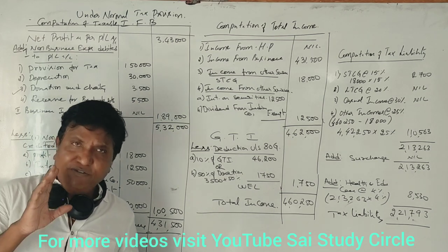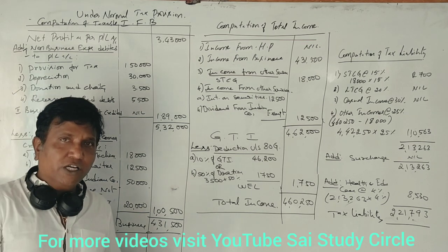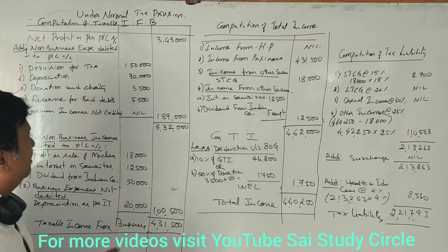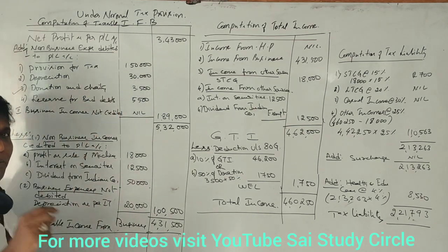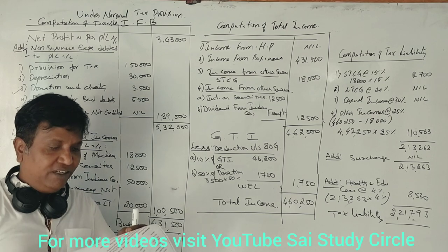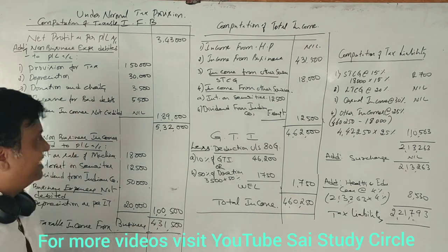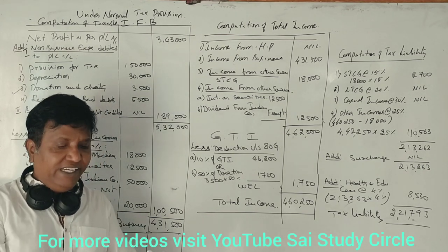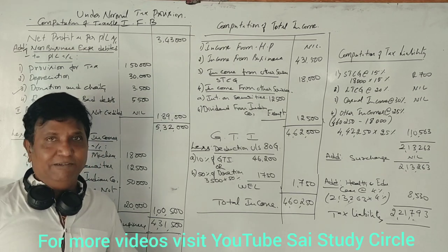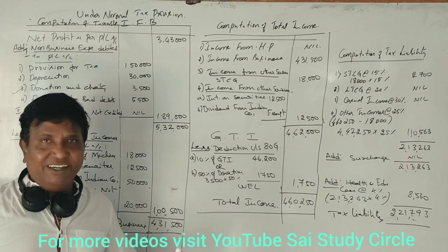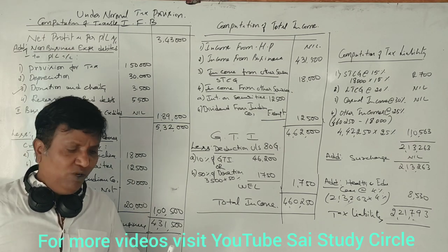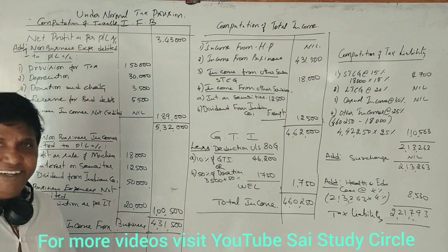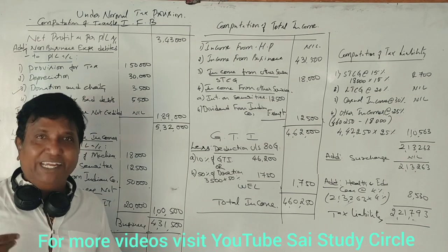Regarding depreciation: whenever we have depreciation in the profit and loss account and also in the adjustments, then only you take it. Depreciation as per the profit and loss account debit side is 30,000 — take it. Next, donations and charities are always non-business in nature — take it. General expenses are other expenses related to business — ignore it. Any provisions or reserves, as I told you, take them. Entertainment expenses are a business expense — ignore them.